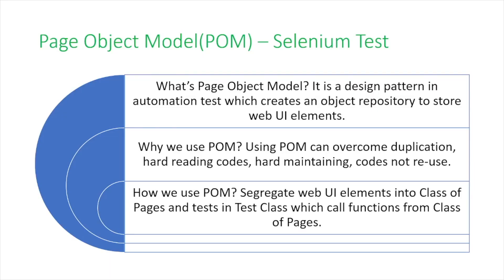In today's video, we're going to talk about page object models and how to implement page object models in Python. First, I'm going to introduce some background information. What are page object models? It's a design pattern in automation testing which creates an object repository to store web UI elements. We use page object models because it can help us overcome code duplication, make our code easier to read, and make it easier to maintain and reuse.